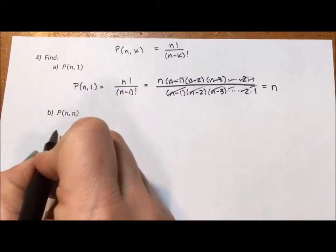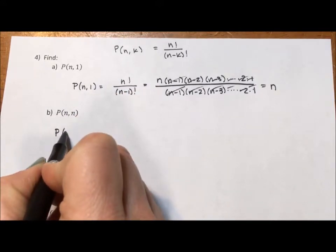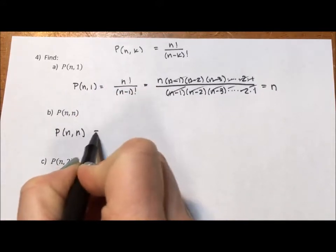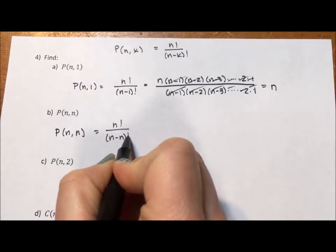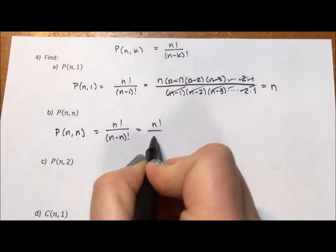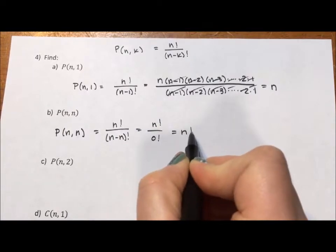If we look at the permutation of n items taking n at a time, this is going to be n factorial over n minus n factorial, which is n factorial over 0 factorial, which is just n factorial.